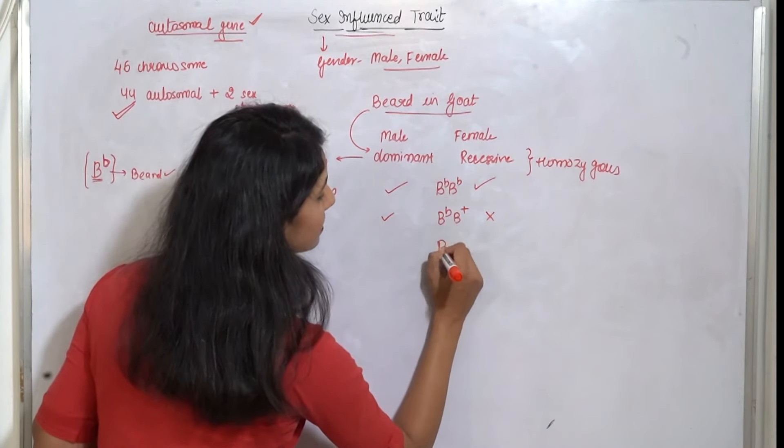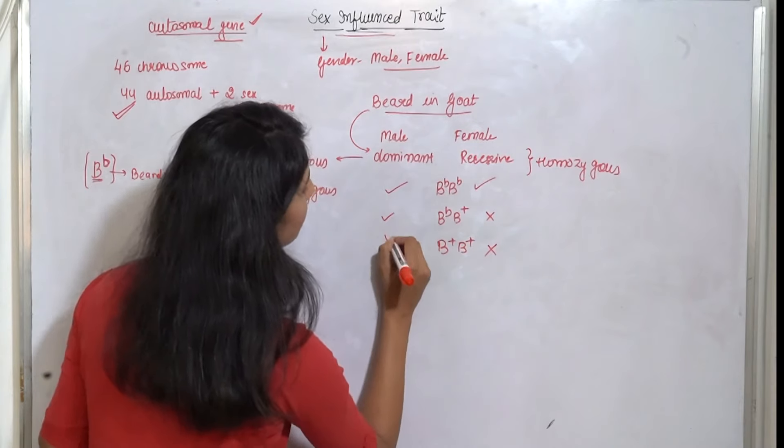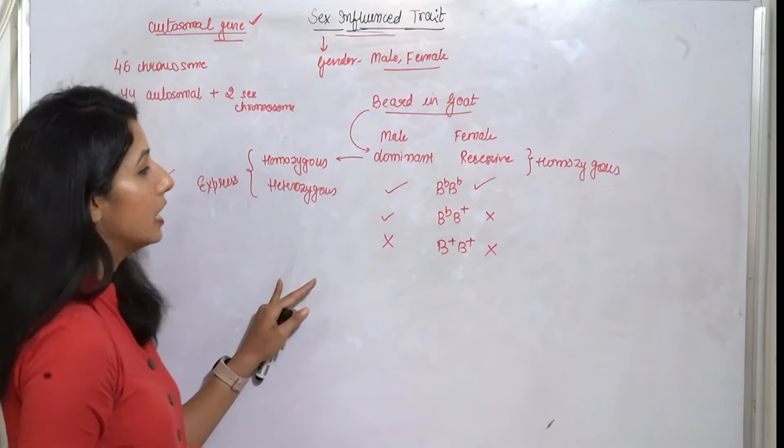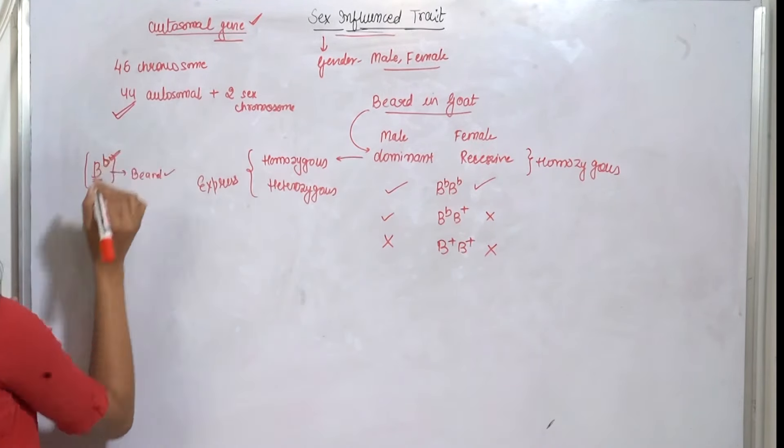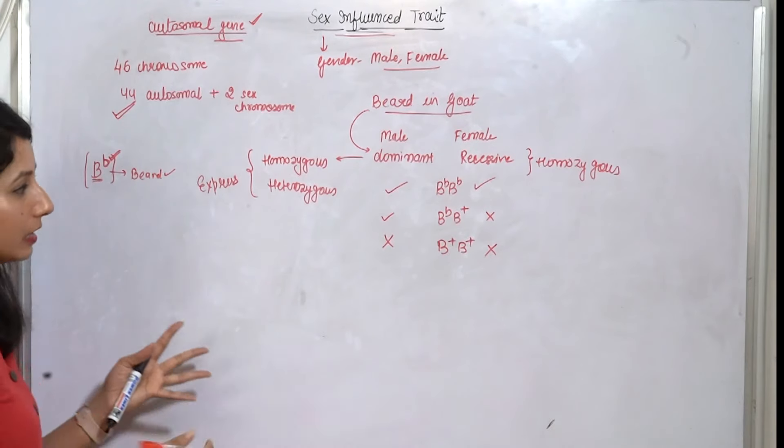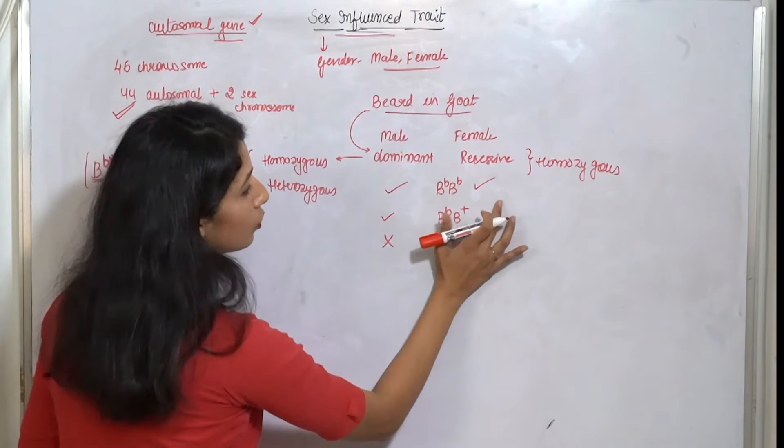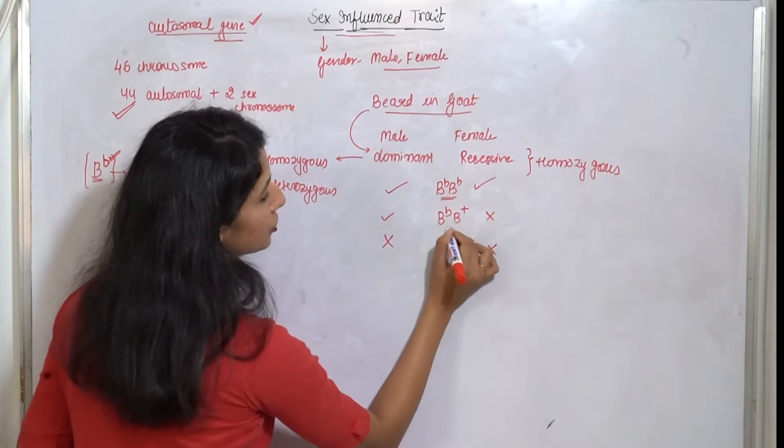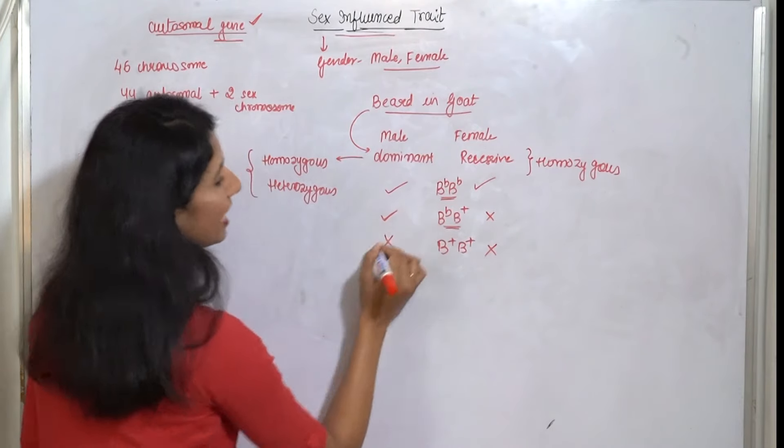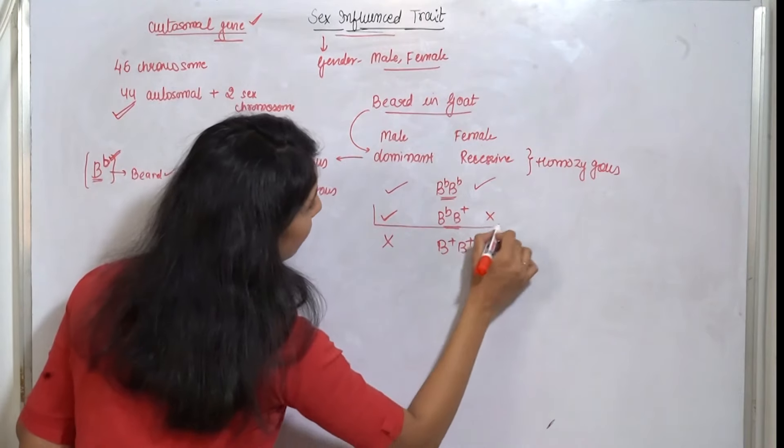If I have said that this condition is present, then both alleles for no beard will not show beard. If capital B is present here, then we will show the beard. So here both homozygous conditions and heterozygous condition in males only.